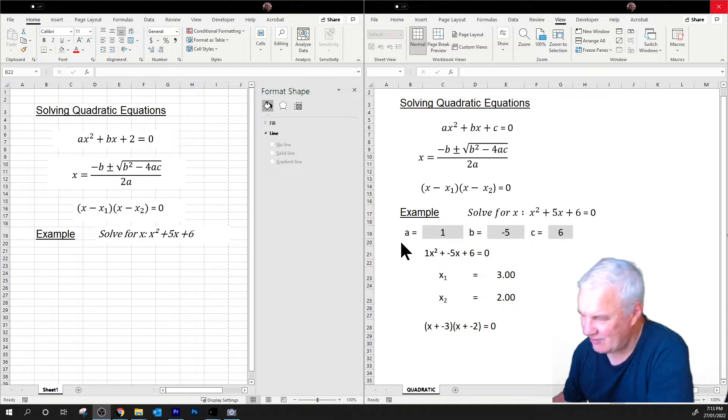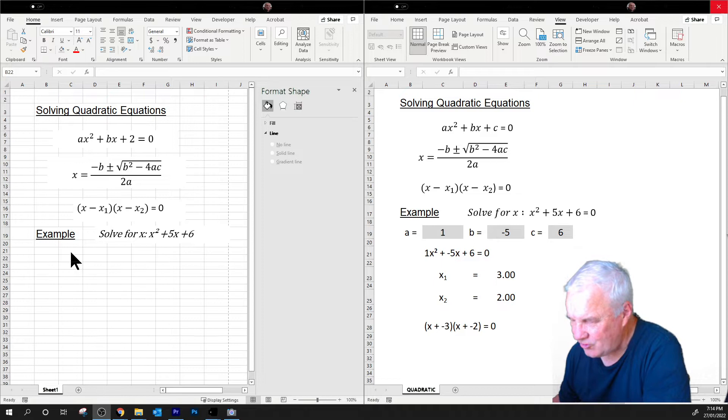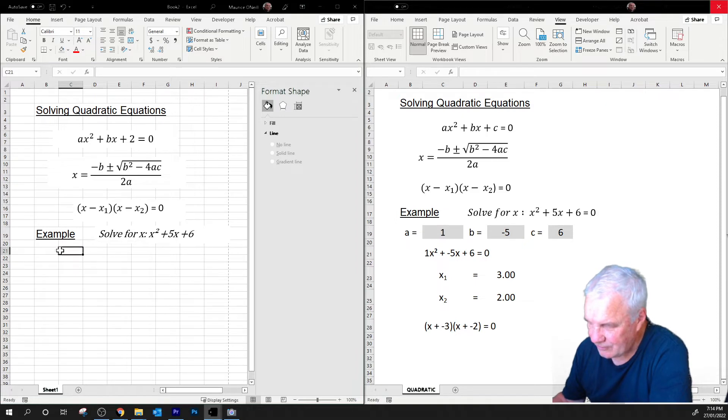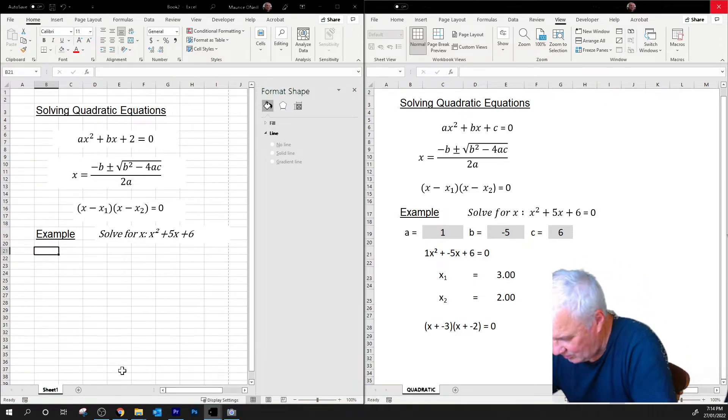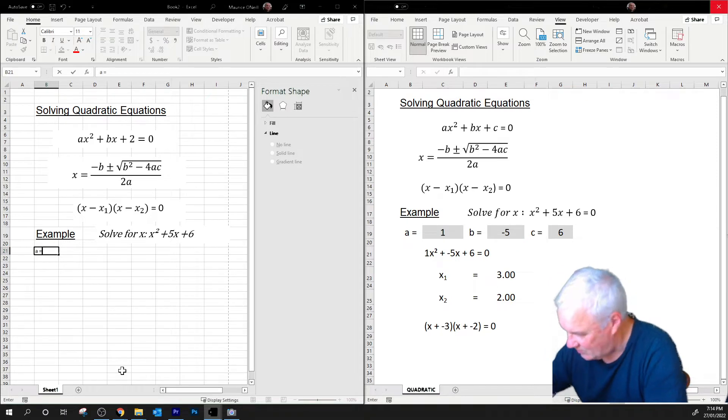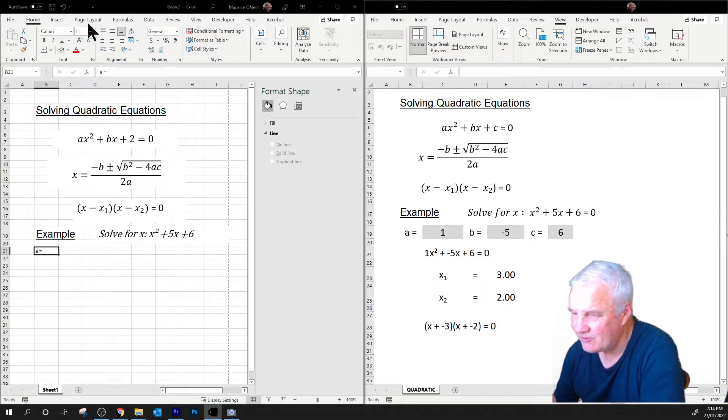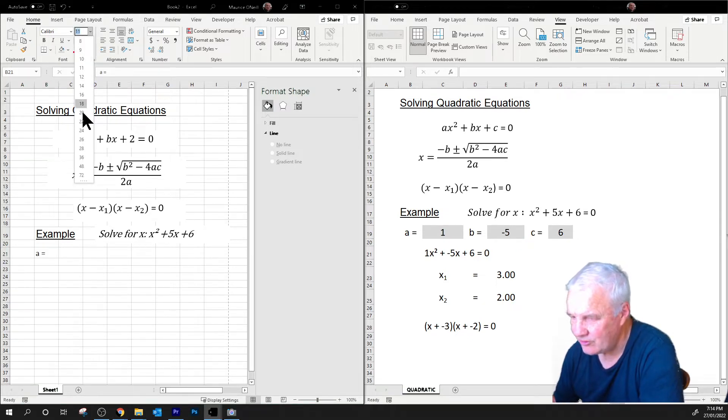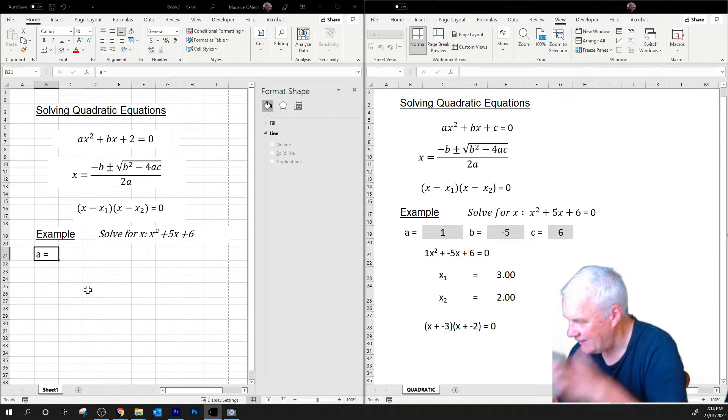We're going to actually maybe start doing a little bit of mathematics soon. So what I'm going to do now is set up here the parameters or the coefficients. A equals, so I'm just going to put A equals in there, and I'm going to make that font size 20, and I think I'll put it in the middle of the cell there.